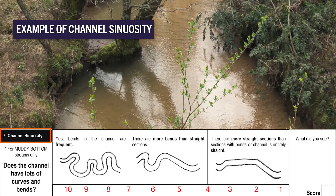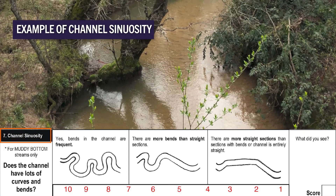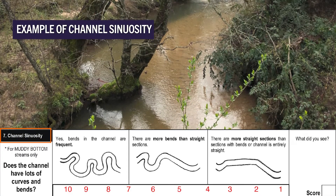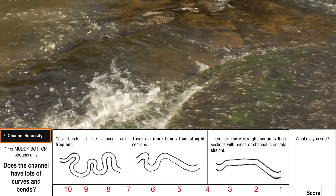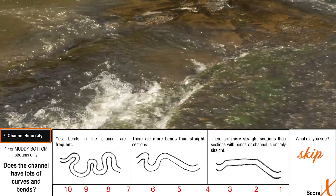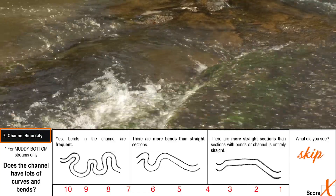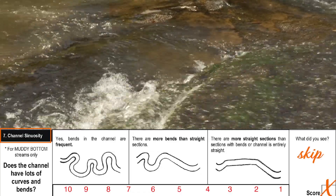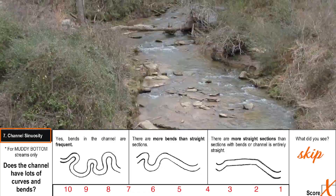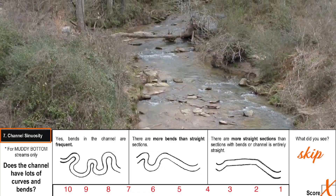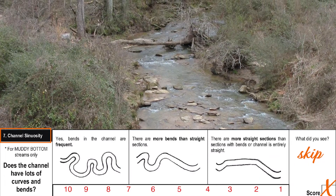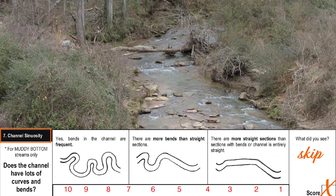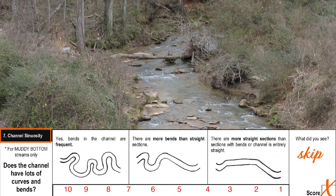Channel sinuosity is only recorded for more sandy substrates. In rocky bottom streams like this one, we would skip this element. All streams naturally meander, though this is often restricted due to urbanization.